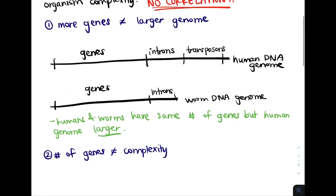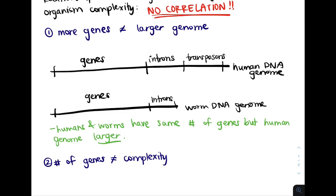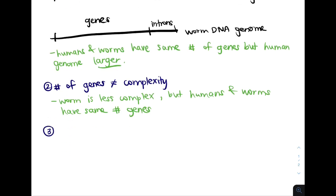So clearly, both humans and worms have about the same number of genes, but a worm is much less complex than a human. So again, there's no correlation between gene number and complexity. And finally, in the same way, genome size does not equal complexity.